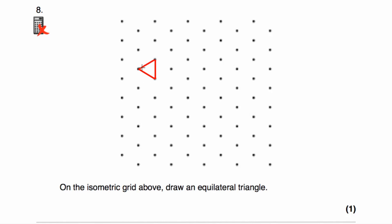That's quite a small equilateral triangle. We could draw a bigger one by counting three units along each direction — one, two, three; one, two, three; and one, two, three — and that would be an equilateral triangle as well.